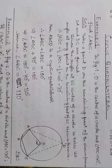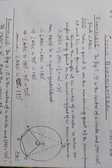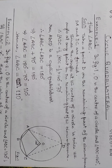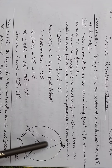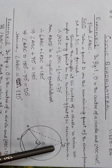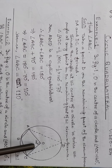The theorem states that the angle at the center of a circle is twice the angle at any point on the remaining part of the circumference. This is the alternate segment theorem — the inscribed angle is double the center angle.